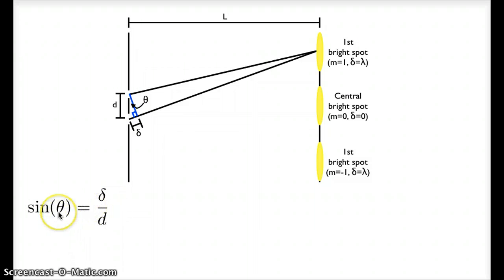So this tells me the angle theta at which a bright spot appears. If I plug in for delta equals lambda, it's the first bright spot, delta equals 2 lambda gives me the second bright spot, and so on.